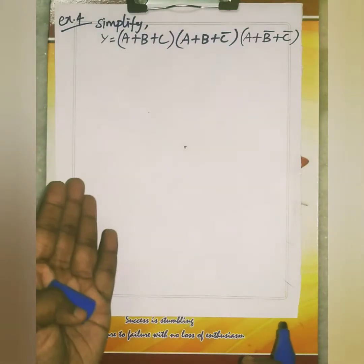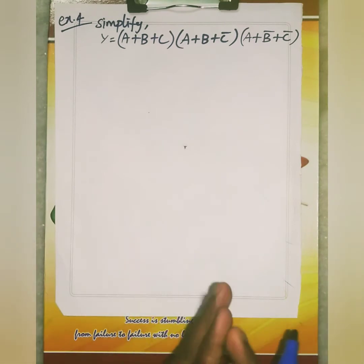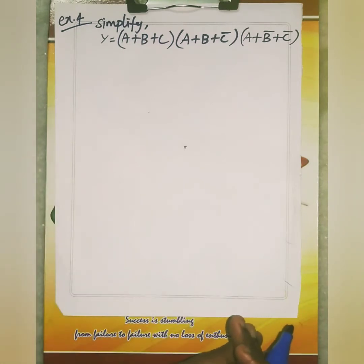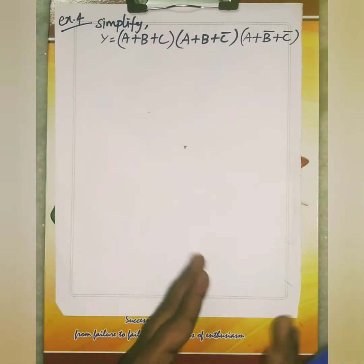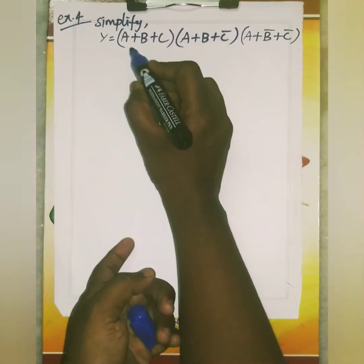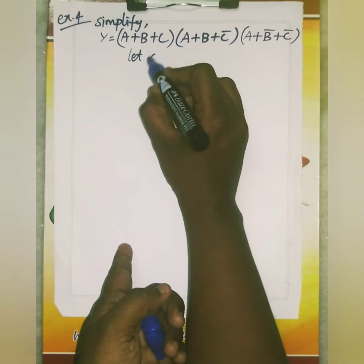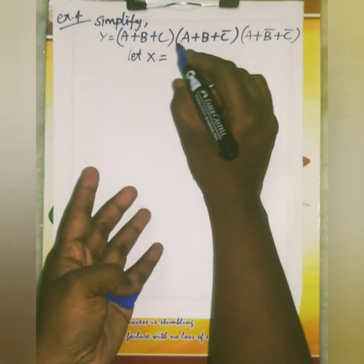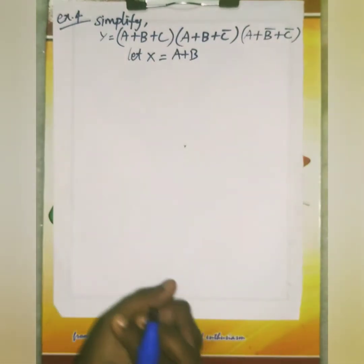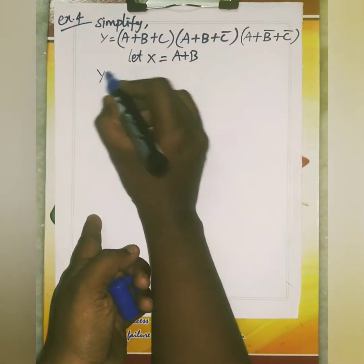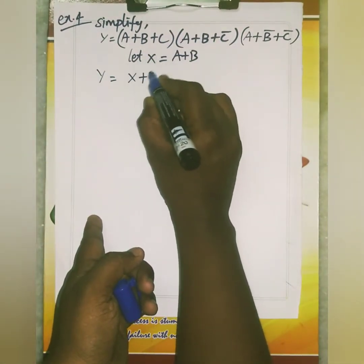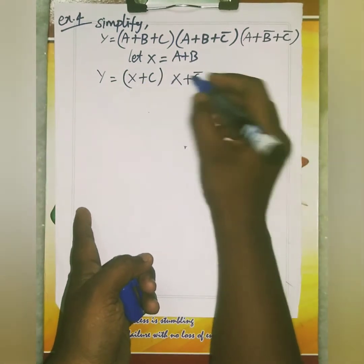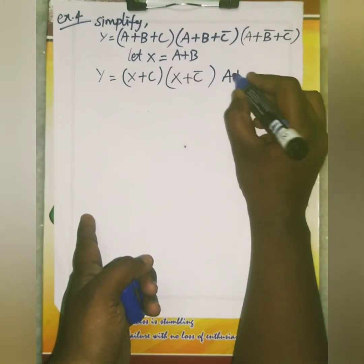This is your fourth exercise: simplify this expression. On seeing the expression itself, we can clearly identify that this is a product of sums form. So let's take A plus B as X. So you just apply X into this function: X plus C, then X plus C bar, and this will come as it is.